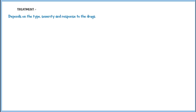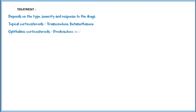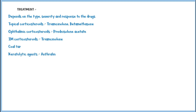The treatment of psoriasis depends on the type, severity, and response to the drugs in different individuals. Some of the commonly used drugs include topical corticosteroids such as triamcinolone and betamethasone, ophthalmic corticosteroids such as prednisolone acetate, intramuscular corticosteroids such as triamcinolone, coal tar, keratolytic agents such as anthralin, vitamin D analogs, and antimetabolites such as methotrexate.